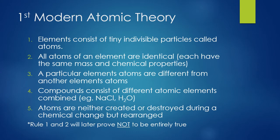For postulate three, a particular element's atoms are different from another element's atoms. That's true — carbon atoms would be different from oxygen atoms, and it's still proven true today. For postulate four, compounds consist of different atomic elements combined. That's just the definition of a compound: if you have two or more elements forming a bond, that's going to be classified as a compound.